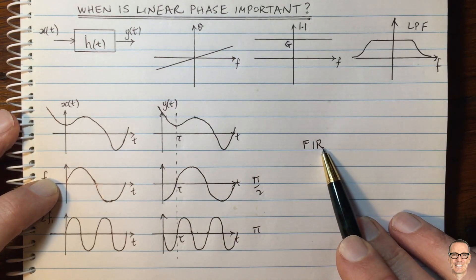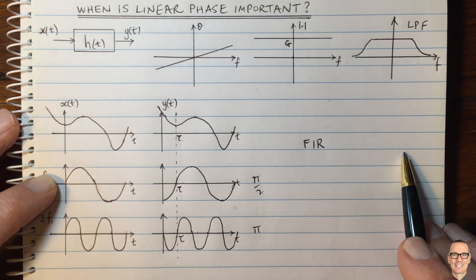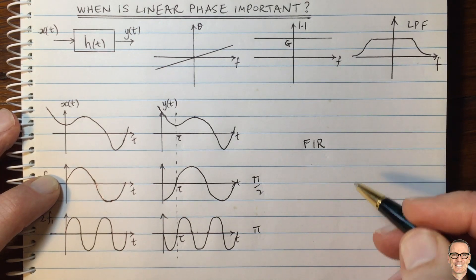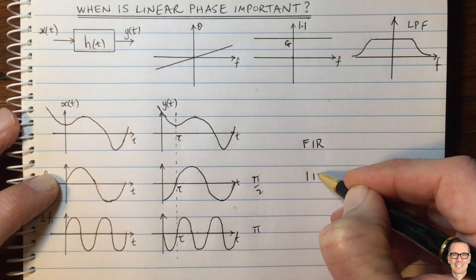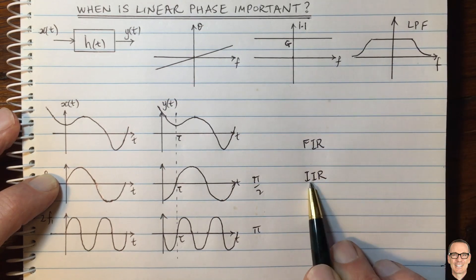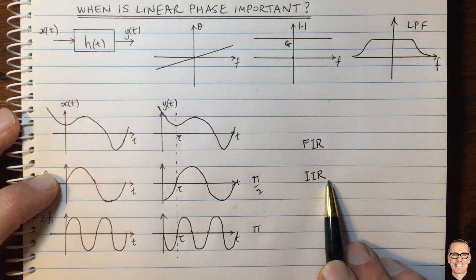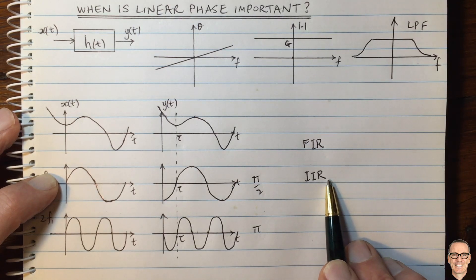One of the problems with finite impulse response is that you may have to have a lot of taps and therefore you might have to have a lot of delay. A comparison would be an infinite impulse response filter in the digital case, and the infinite impulse response filters have much shorter delays and are less complex to implement, but unfortunately, they don't have linear phase.